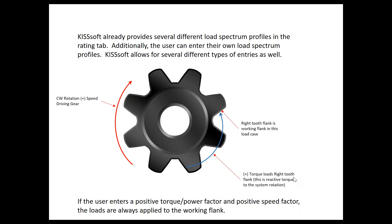Here are several different load spectrum profiles you can enter, with different types. As an illustration: if you're positive on speed — clockwise rotation — and positive on torque, it means the torque is reactive counterclockwise to the load, and it's loading the right-tooth flank, as you can see here.